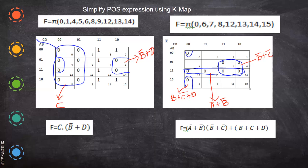Now what you have to do is form the pairs and quads. When you roll the map here, you get a quad. In all the places you have to substitute with one and leave the ones as they are. So only for zeros you have to form the pairs and quads. Here we have a quad, and this is an octet. Now how can you write the expression after arriving at this?